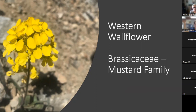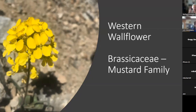We have our western wallflower, which is in the mustard family. Mustard family plants generally have four petals and will also have four tall stamens and two short stamens. If you look really closely, you can count those. Having four petals is a big giveaway for the mustard family. This one is a sort of globe of yellow flowers on a long stalk; they like drier areas across the mountains, and I have seen some of those blooming recently.